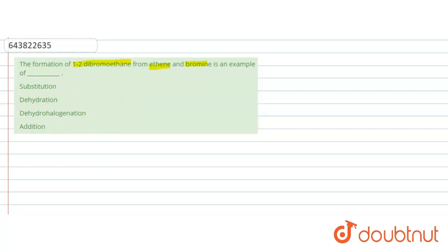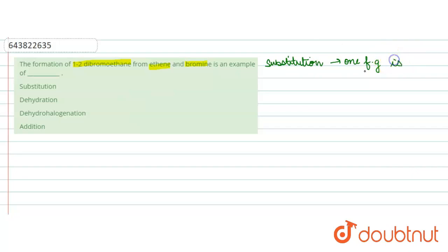Let's start with our first reaction — substitution reaction. It is the process in which one of the functional groups in the reactant or in the molecule is replaced by or exchanged with another functional group.